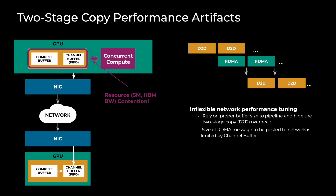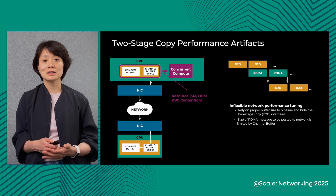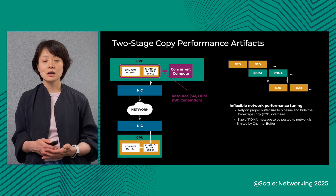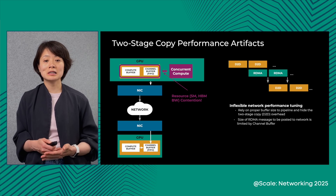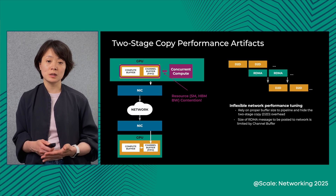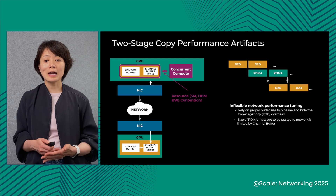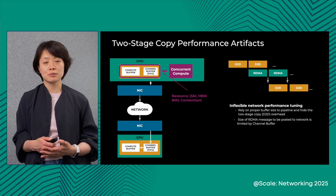For example, a too-big buffer would benefit network speed but suffer from more exposed copy overhead. On the other hand, a small buffer would help hide the extra copy but would limit the network transfer speed — especially making it harder to saturate high-latency network connections.